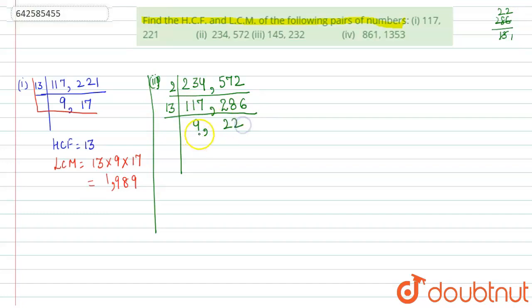So now see, 9 and 22 are co-prime numbers, so we don't have any common factors except one. So we'll stop here. And HCF we can all see it is 2 times 13, which is equal to 26. For LCM, again remember the L,